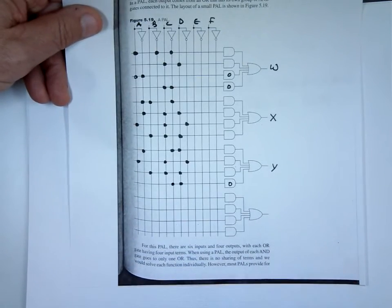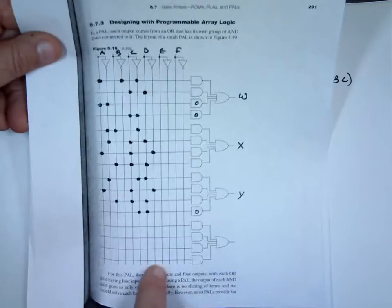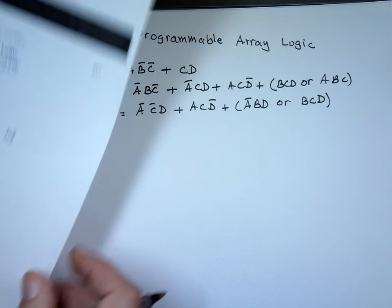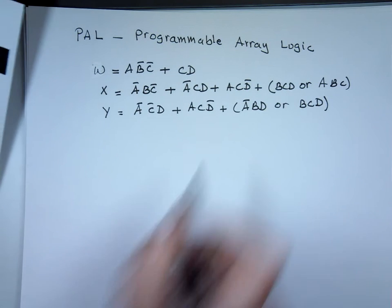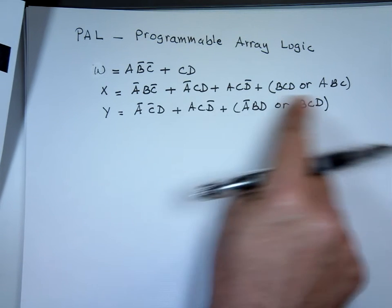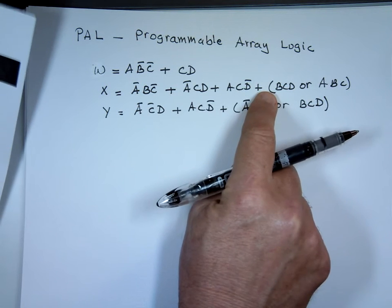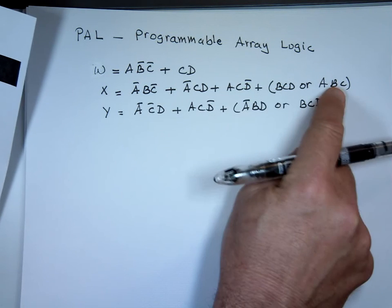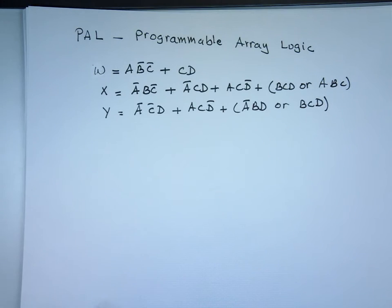Much easier. I'm not using one output — that's a wasted one. But maybe for a different example I might need it. So that's when you have four or fewer AND gates. What happens if you need more than four AND gates? Let's look at that scenario.